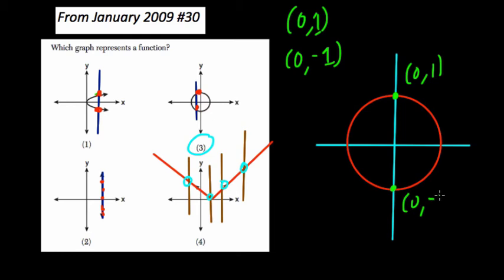And already here, if I draw a vertical line through the circle here, it would cross these two points twice. And that's a problem because these two points have the same x value. They both have 0 for an x value.